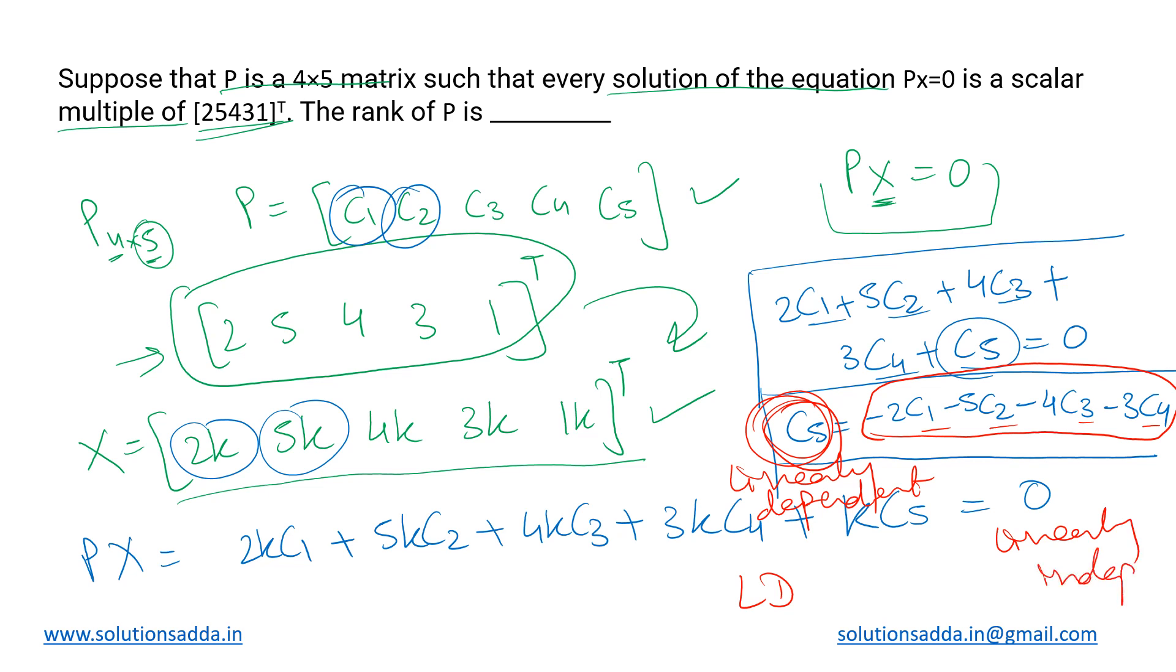These column vectors are not dependent on each other, but all of them together determine the value of c5. So we have four linearly independent column vectors and one linearly dependent column vector. In this 4×5 matrix, how do we determine the rank? Rank is nothing but the number of linearly independent column vectors in the matrix.